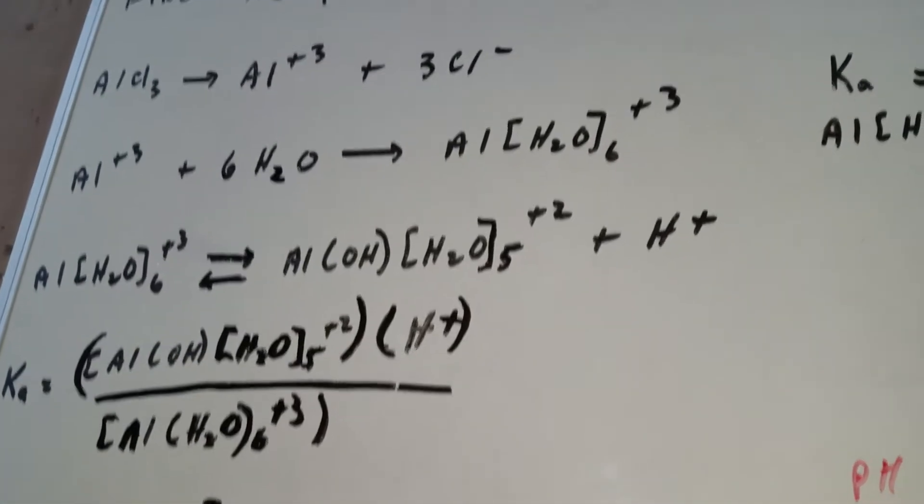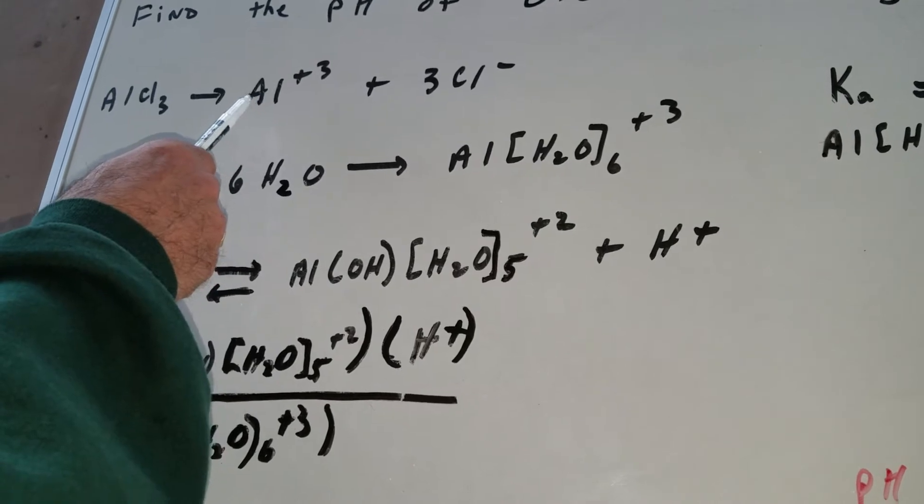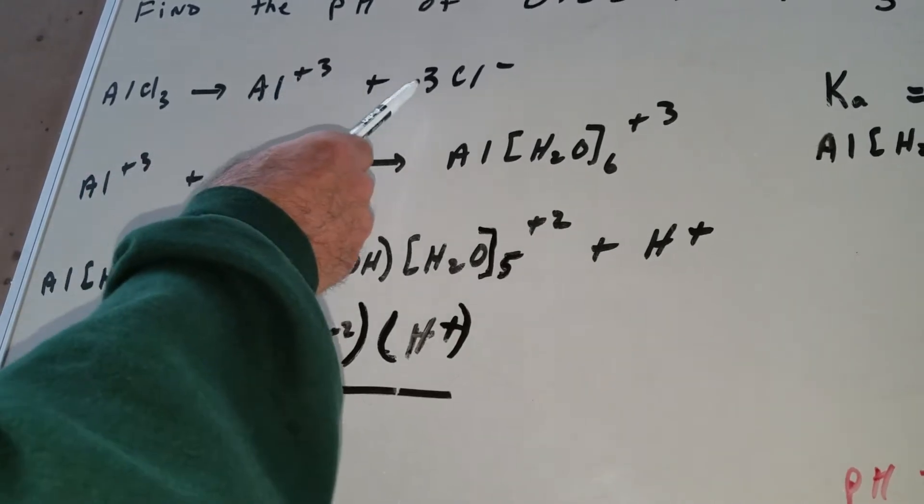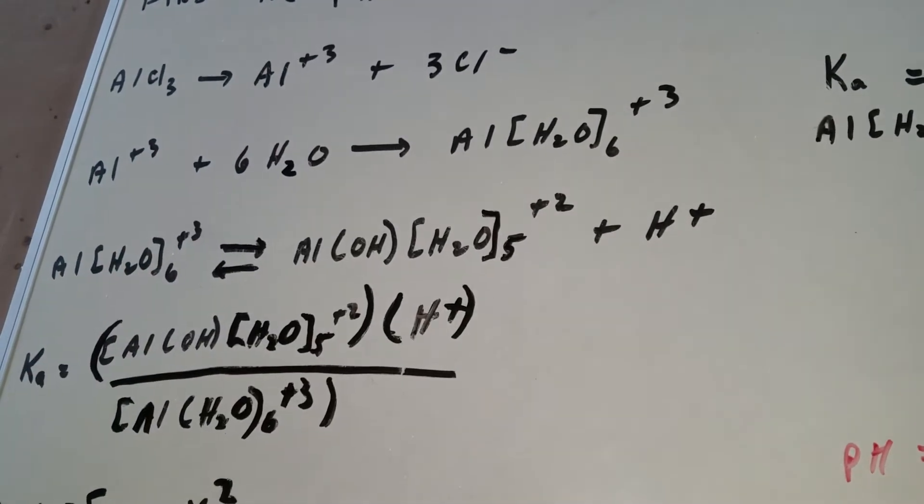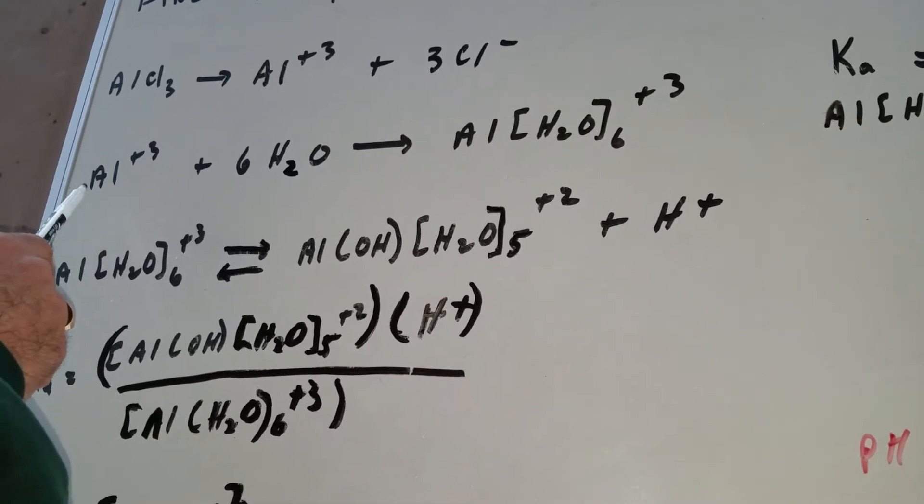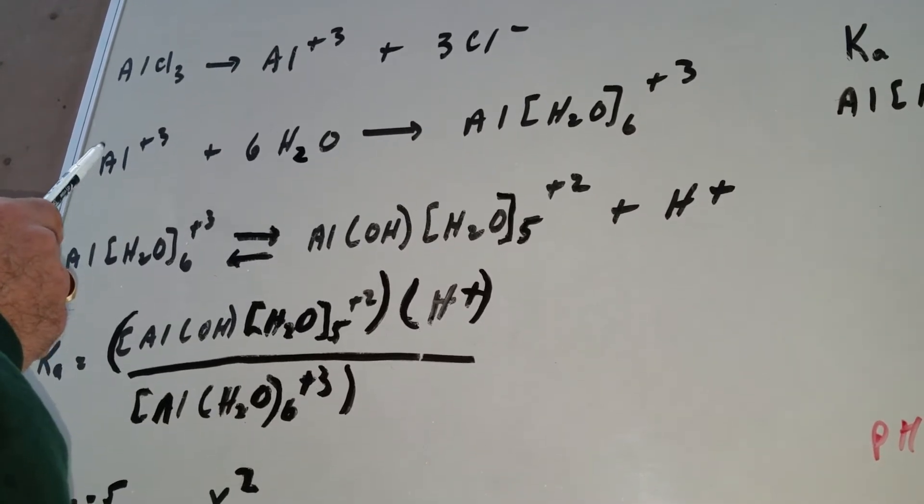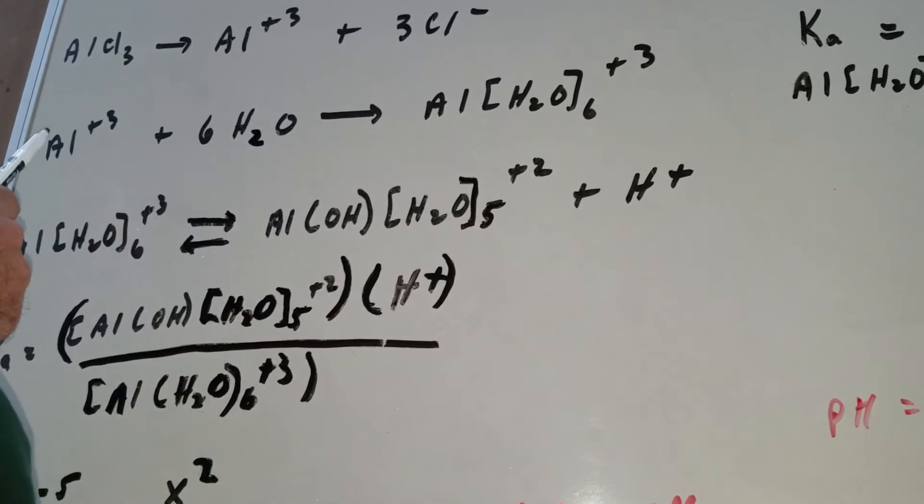The first thing I do is take the aluminum chloride and make it dissociate into aluminum ions and three chloride ions. Now, the aluminum ion is the thing that's going to react since I gave you the Ka of hydrated aluminum.